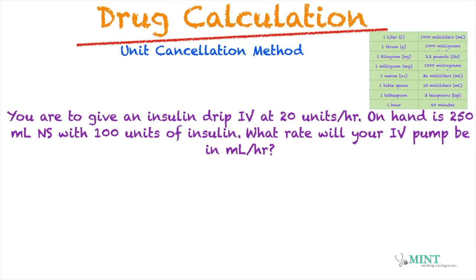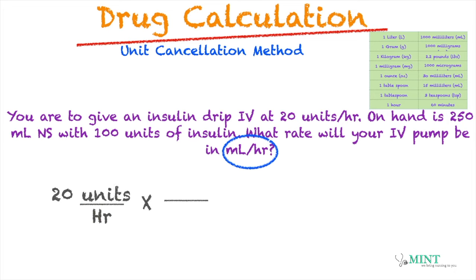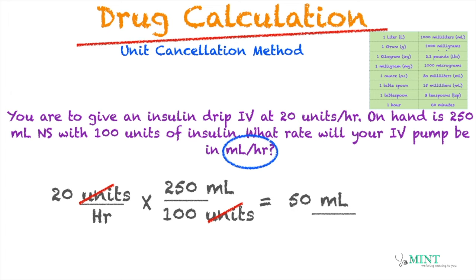You're to give an insulin drip at 20 units per hour. On hand is 250 ml of NS with 100 units of insulin. What rate will your IV pump be in ml per hour? The problem is looking for ml per hour. We write 20 units per hour times 250 ml over 100 units, cancel units, and we're left with ml per hour. The math: 20 times 250 divided by 100 gives us 50 ml per hour.